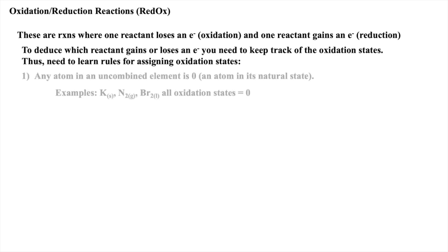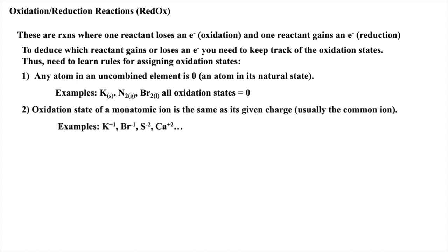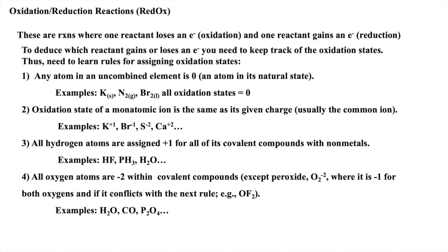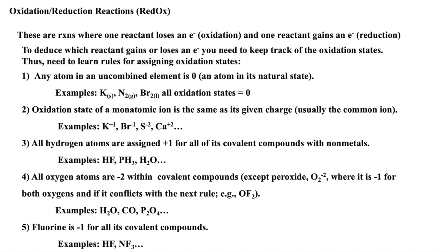In no particular order: Rule 1, an atom in its natural state is zero. Next, a monatomic ion is the same as its given charge, which is usually the common ion. All hydrogens are plus one, and all oxygens are minus two within covalent compounds, and fluorine is always minus one. With just these basic rules, we should be able to assign oxidation states to atoms within common neutral molecules and common polyatomic ions.